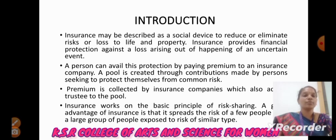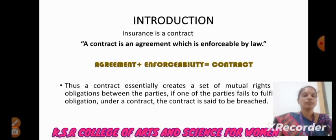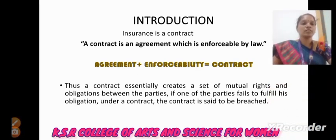Insurance works on the basic principle of risk sharing. It is the advantage of insurance that it spreads the risk of few people to a larger group of people exposed to risk of a smaller type. Insurance is a contract. A contract is an agreement which is enforceable by law. Therefore, agreement plus enforceability equals contract. A contract essentially creates a set of mutual rights and obligations between the parties. If one of the parties fails to fulfill his obligation under a contract, the contract is said to be breached.